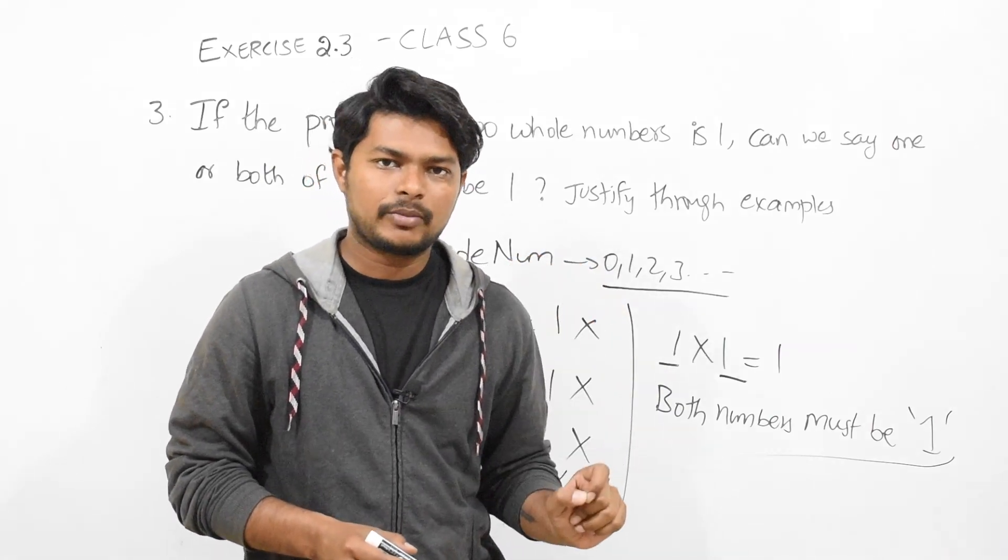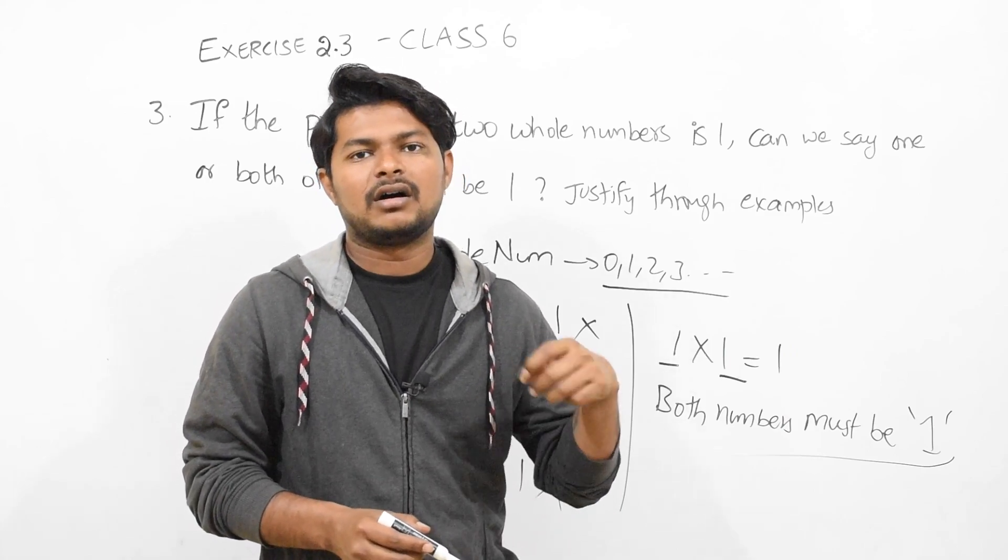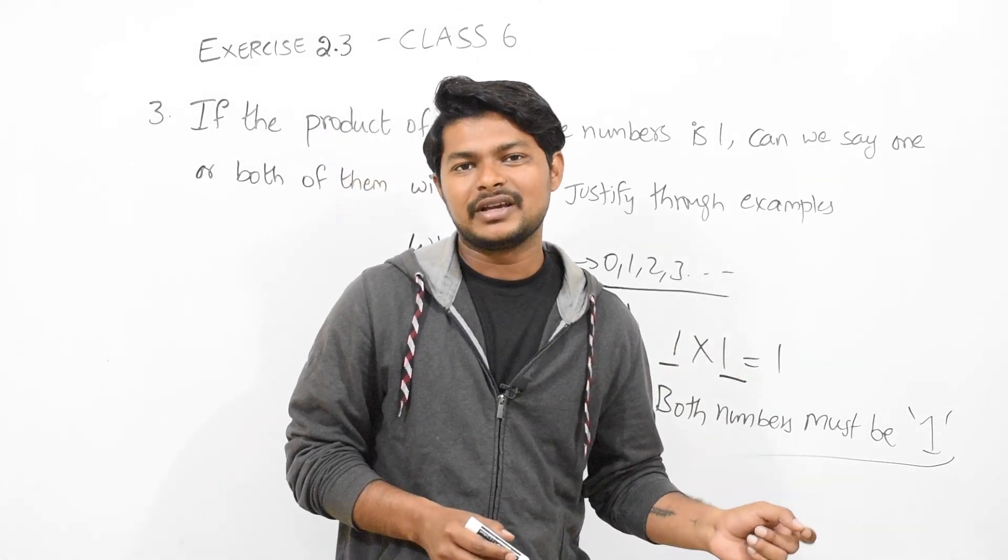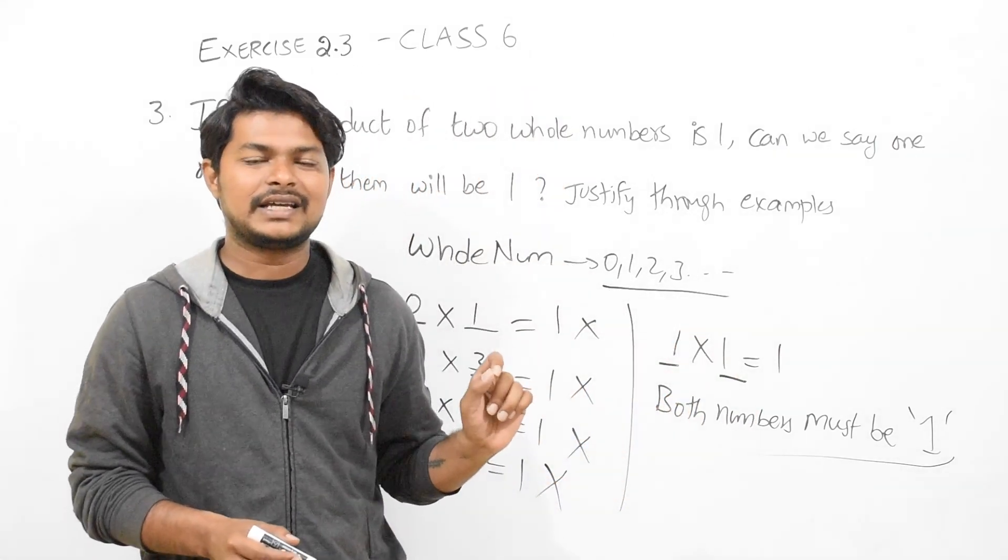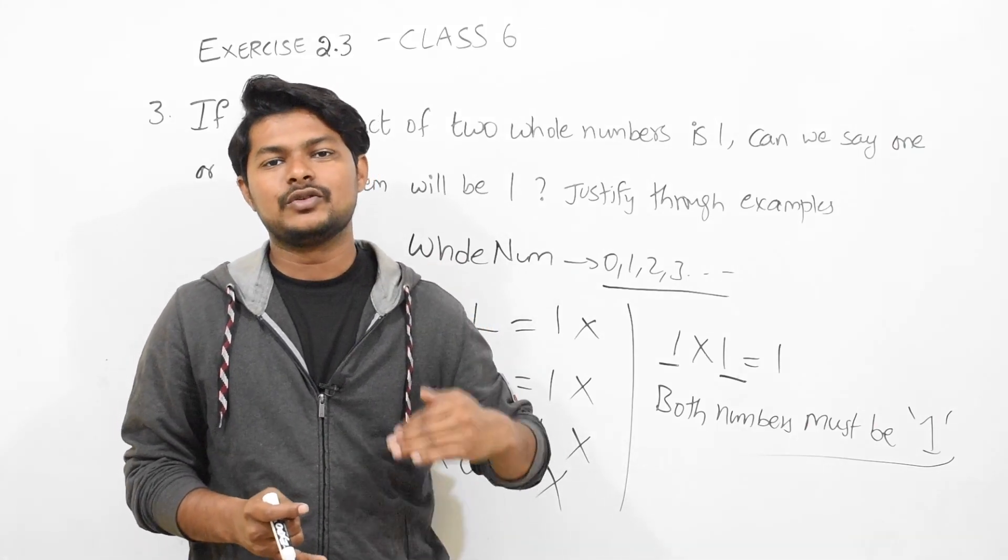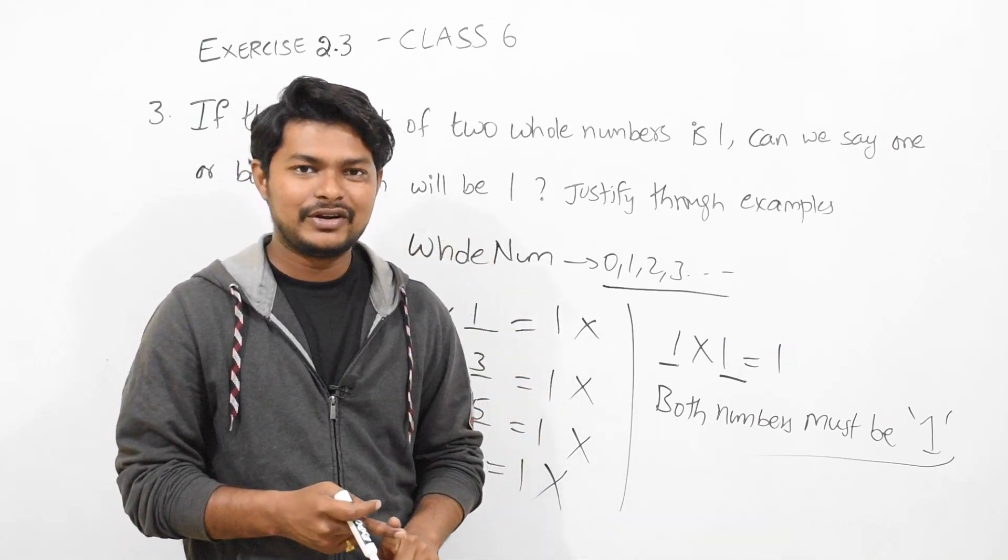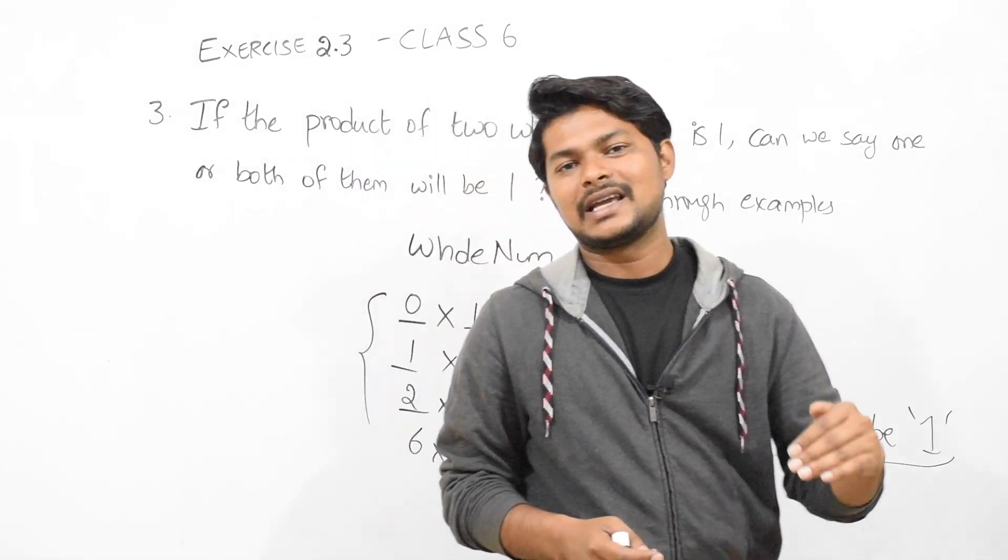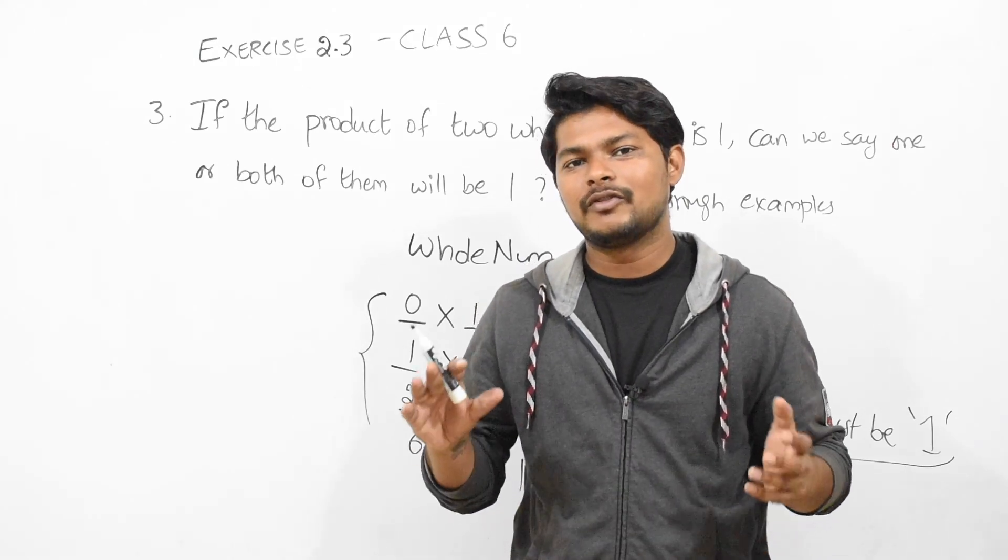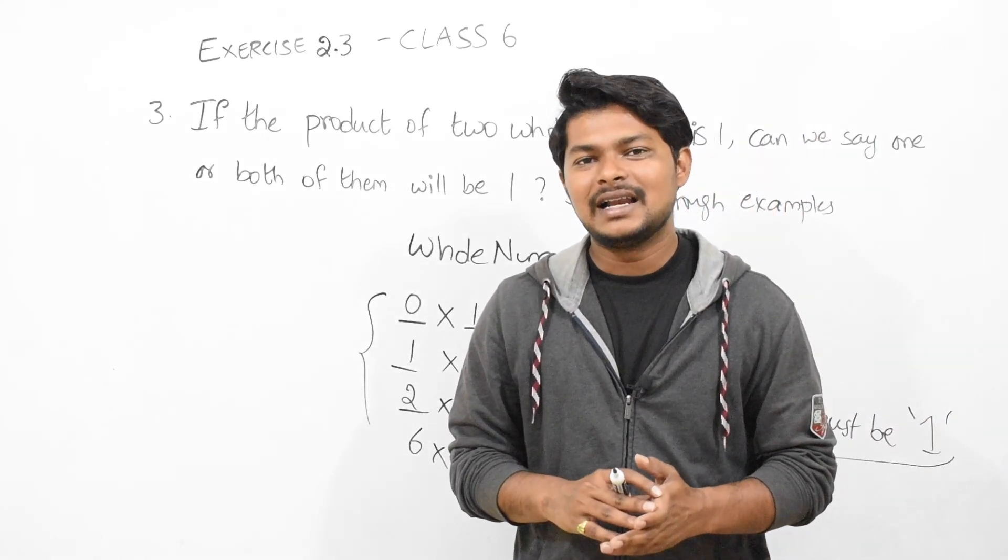Suppose let us take 0 multiplied by 1, is it equal to 1? No, right. Now let us take another number, 1 and 3. Is 1 into 3 equal to 1? No, right. Likewise, if you take any two numbers, 2 into 5, is 2 into 5 equals to 1? That is also wrong, right.